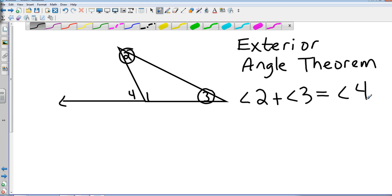Angle 2 plus angle 3 are going to equal angle 4 and they're going to do some different problems to get you to use that and try to figure out what the missing angle. So let's go ahead and set one of those up.